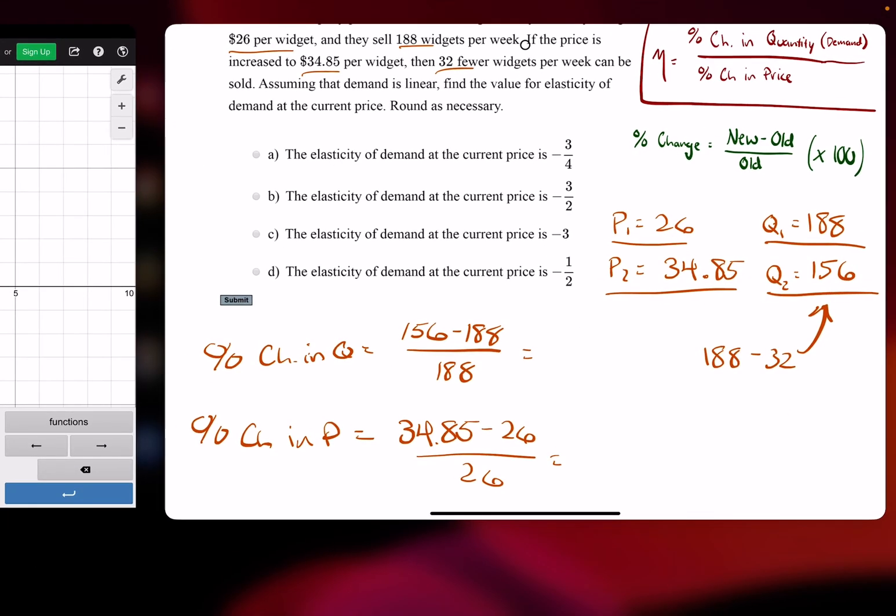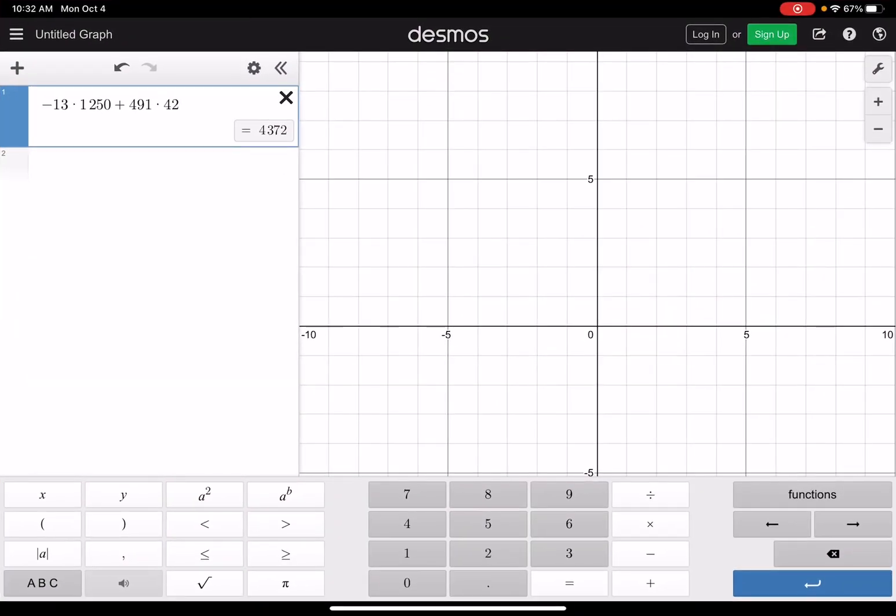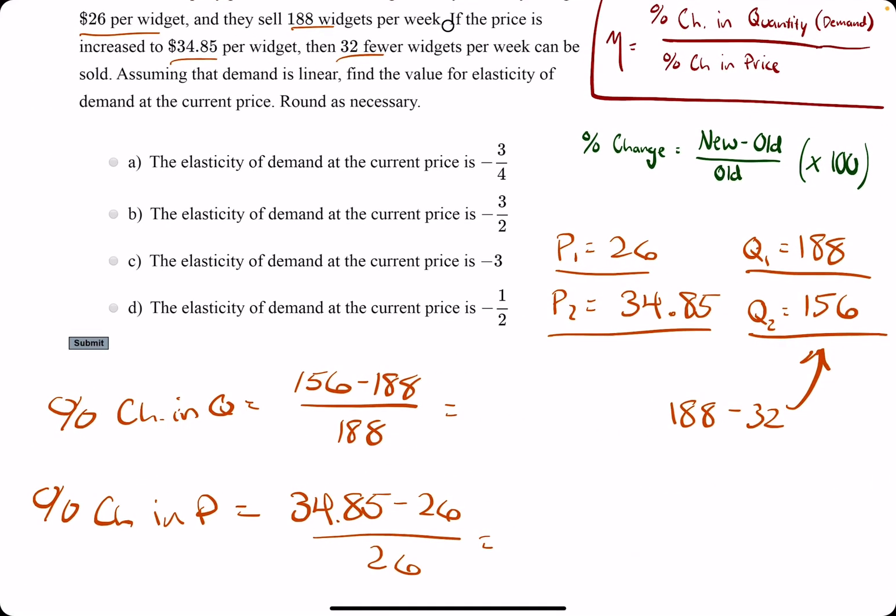And we will calculate that. So 156 minus 188. We get negative 32, of course, because they say decrease by 32, divided by the old 188. So we get negative 0.170.